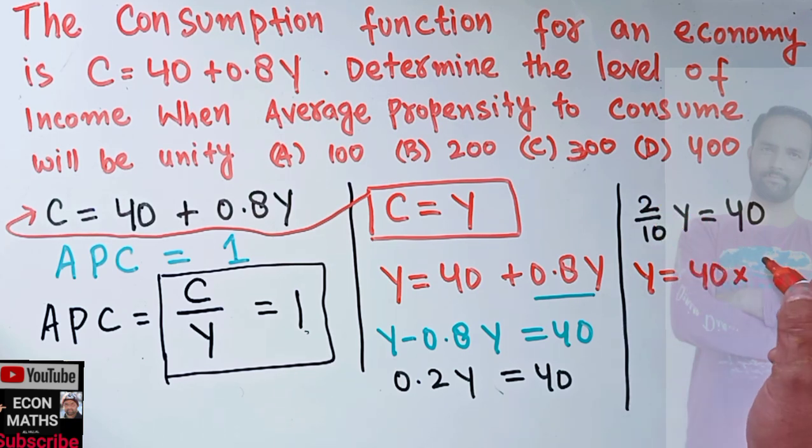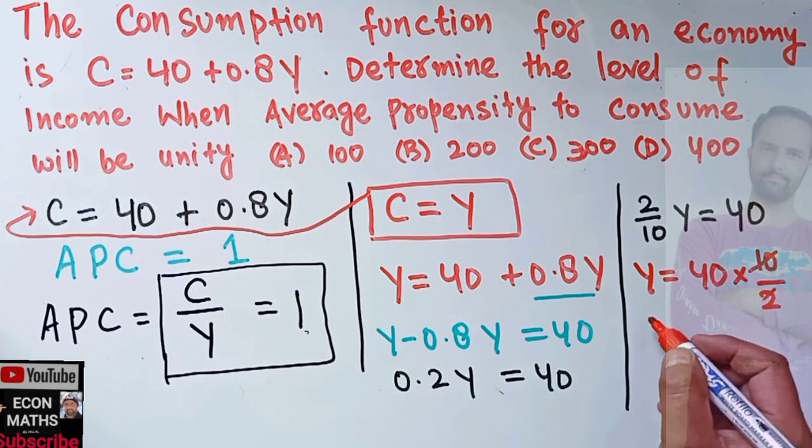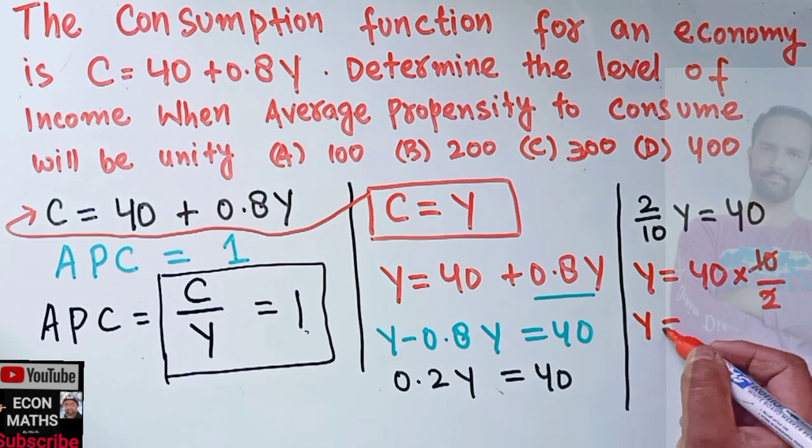So we have here 2 × 1 = 2, 5 × 2 = 10. That means Y will be equal to 40 × 5, which comes out to be 4 × 5 = 20, which comes out to be 200.